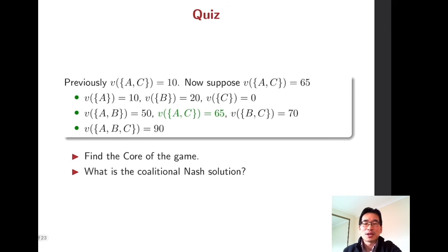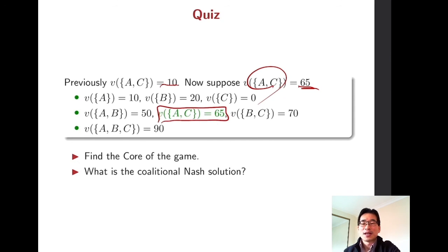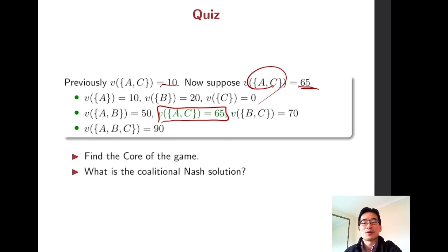Here we have a quiz. Everything is the same, but now A and C jointly produce 65 instead of 10. Please try to find the core allocations of this new game and also think about what the coalitional Nash solution is in this problem.